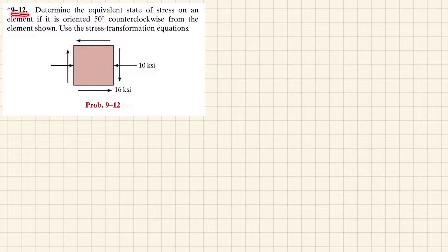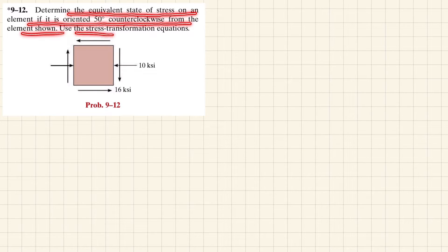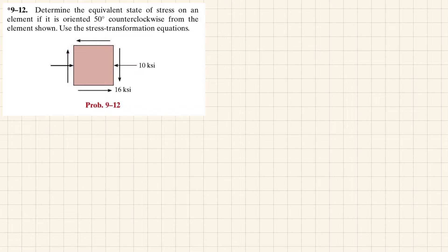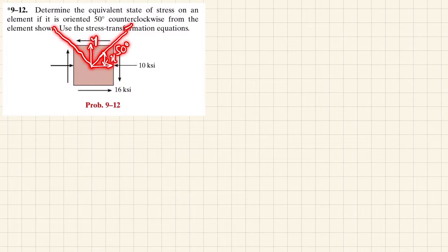Welcome back. Problem 9-12: determine the equivalent state of stress on an element oriented 50 degrees counterclockwise from the element shown, using the stress transformation equations. You can see the state of stress: Sigma X is 10 KSI in compression, and the shear stress Tau XY is 16 KSI, also negative. Let this be your X axis and this be your Y axis. The new axis is rotated 50 degrees counterclockwise, giving you X dash and Y dash.